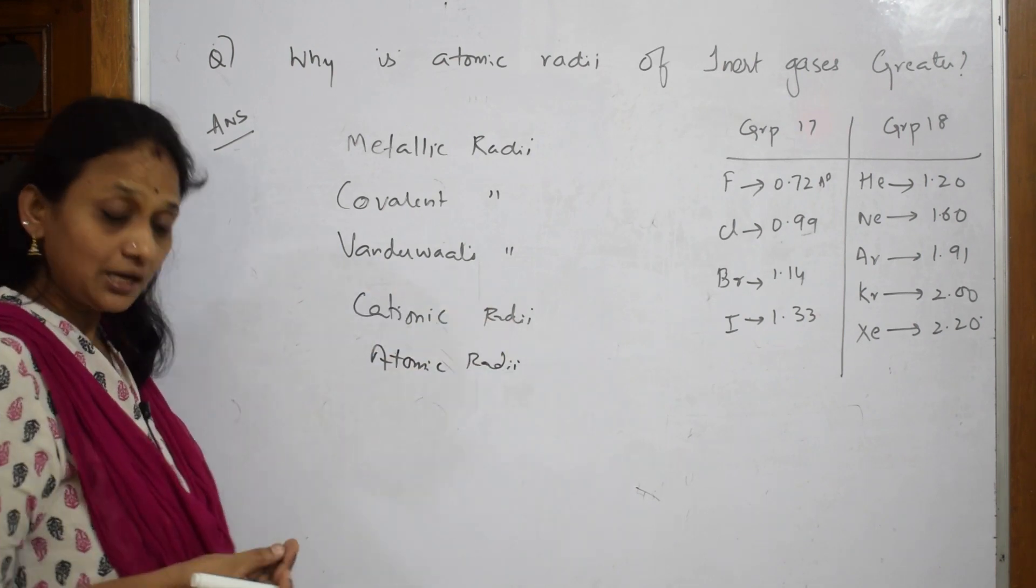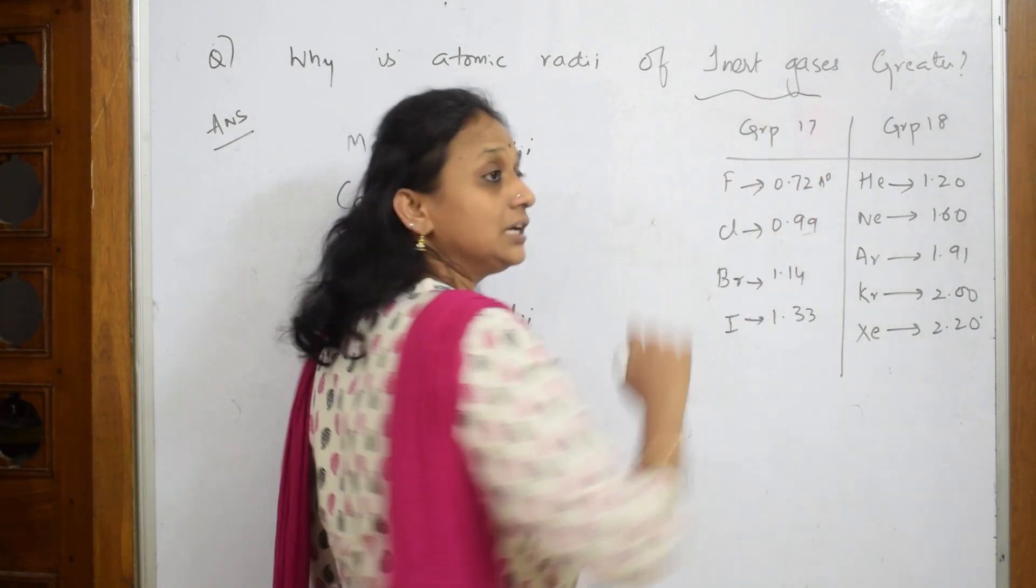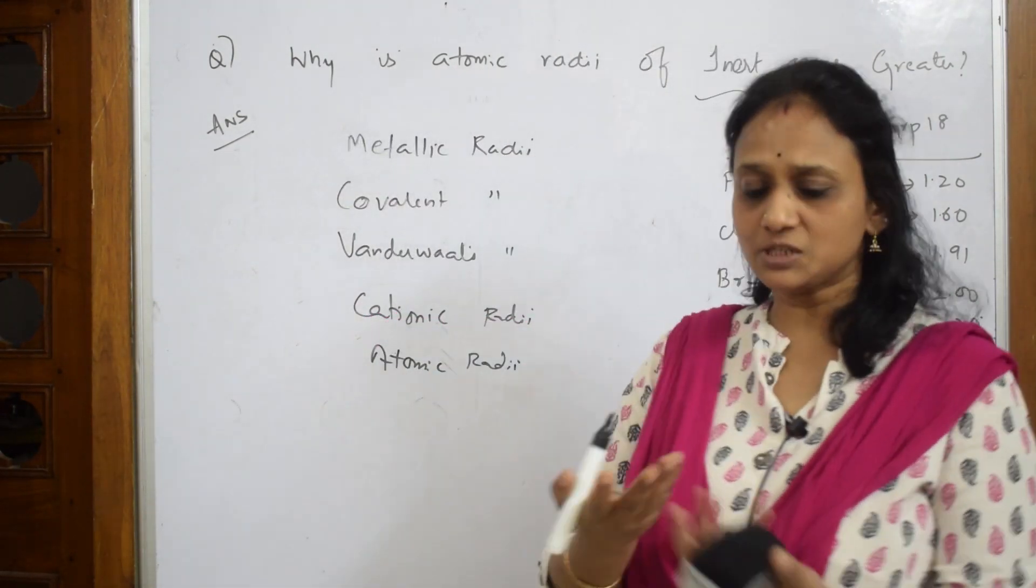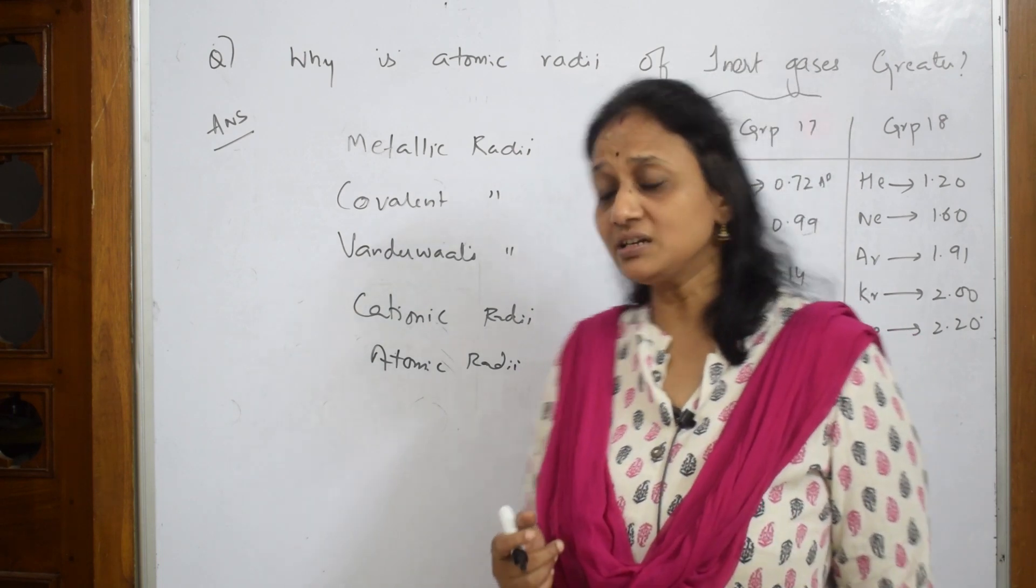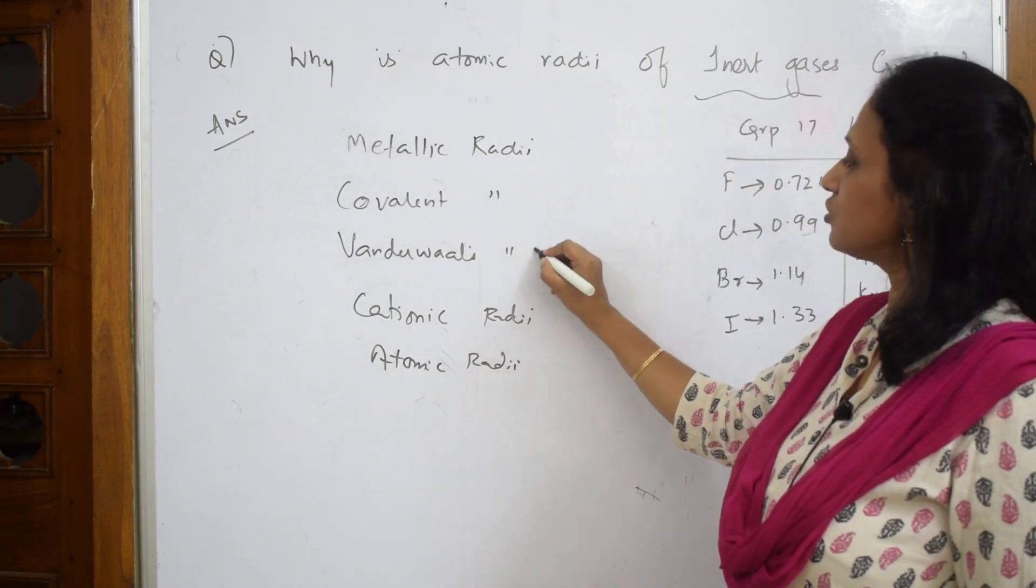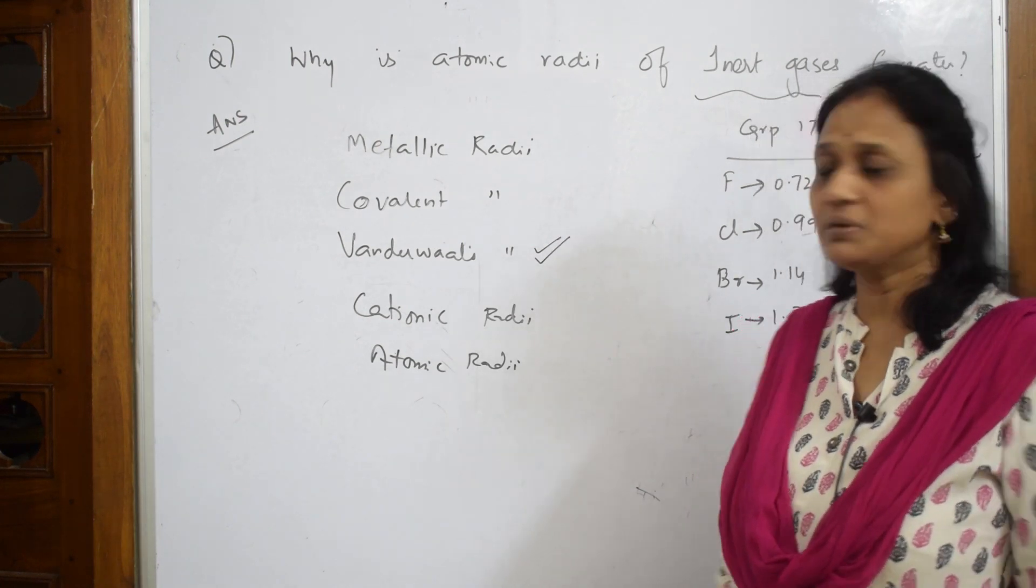Whenever they ask about inert gases, remember: normally we speak about covalent radius for two bonded atoms, but in case of inert gases we need to concentrate on van der Waals radius only.